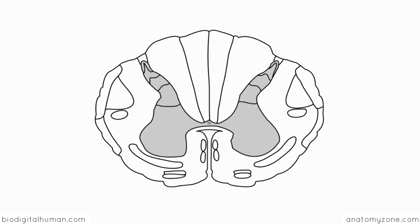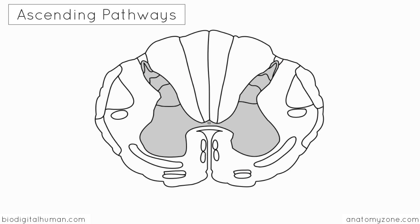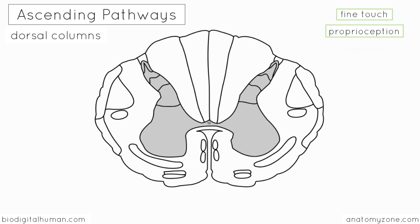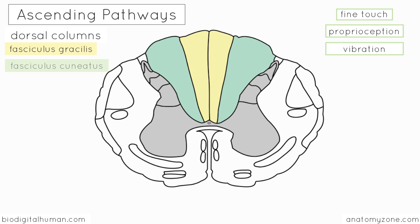First we'll take a look at the ascending pathways. We'll look at the dorsal columns, which convey fine touch, proprioception and vibration sense from the periphery up to the brain. You've got the fasciculus gracilis, highlighted in yellow, and the fasciculus cuneatus. Just remember that fasciculus means small bundle.